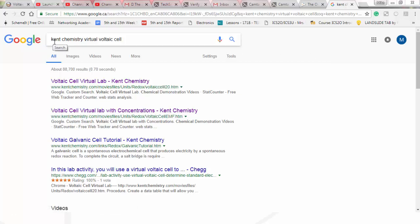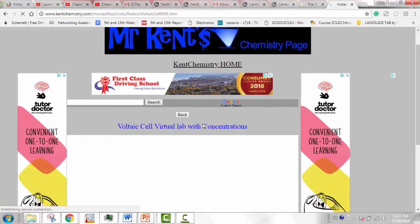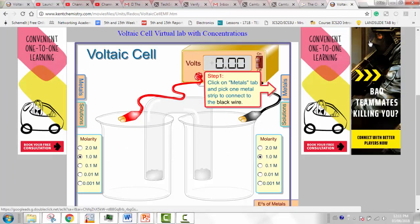So when you go into Google, do a search on something like Kent Chemistry Virtual Voltaic Cell and choose the option that has concentrations in it. Go ahead and click on it and when you do, you'll see something like this.